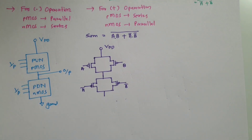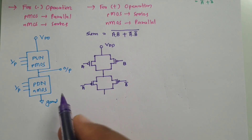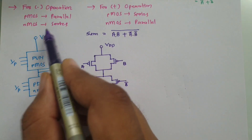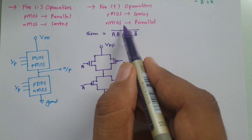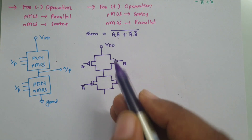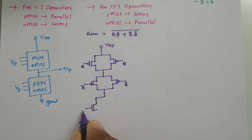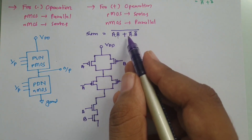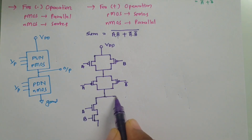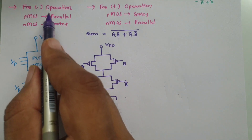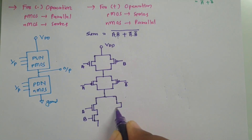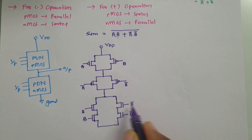Now we form the pull-down network using NMOS transistors. For dot operation, NMOS is in series: A and B are connected in series. For plus operation, NMOS is in parallel: this series combination is placed in parallel with another branch. For ĀB̄, dot means NMOS in series, so Ā and B̄ are connected in series. These two branches are in parallel, then connected to ground.